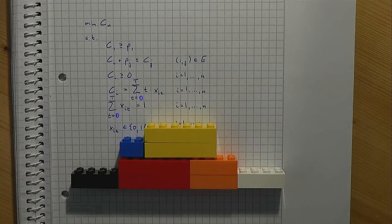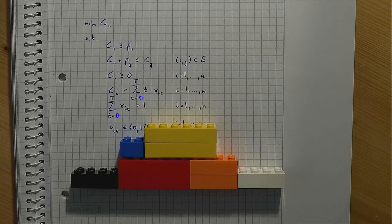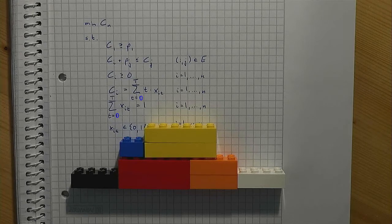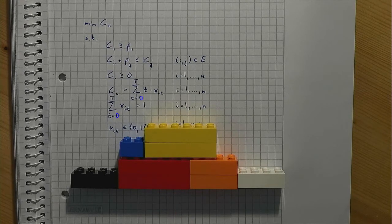As you can see in the illustration, the former schedule is not feasible anymore because there are points in time where more than three workers are needed. Obviously, we must look for other schedules.